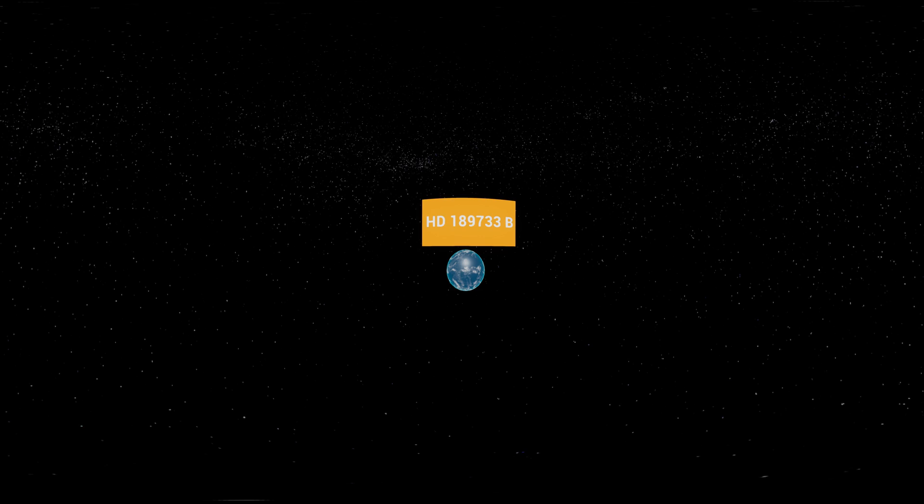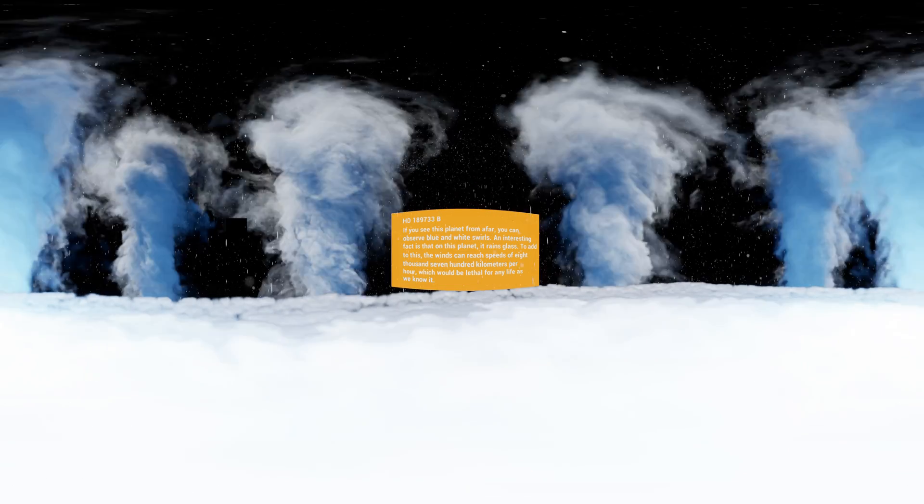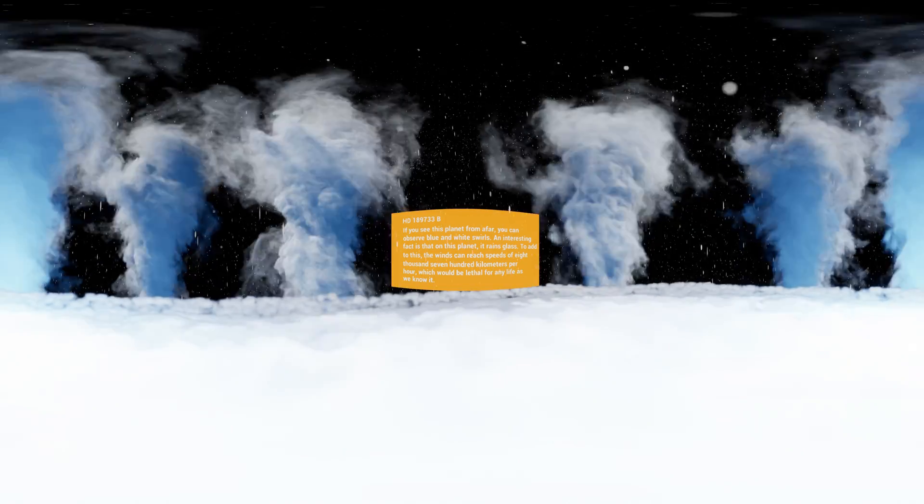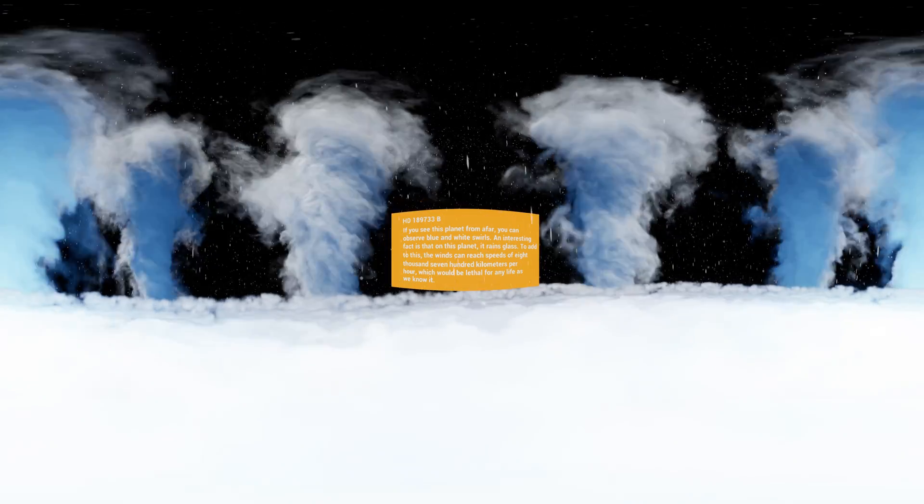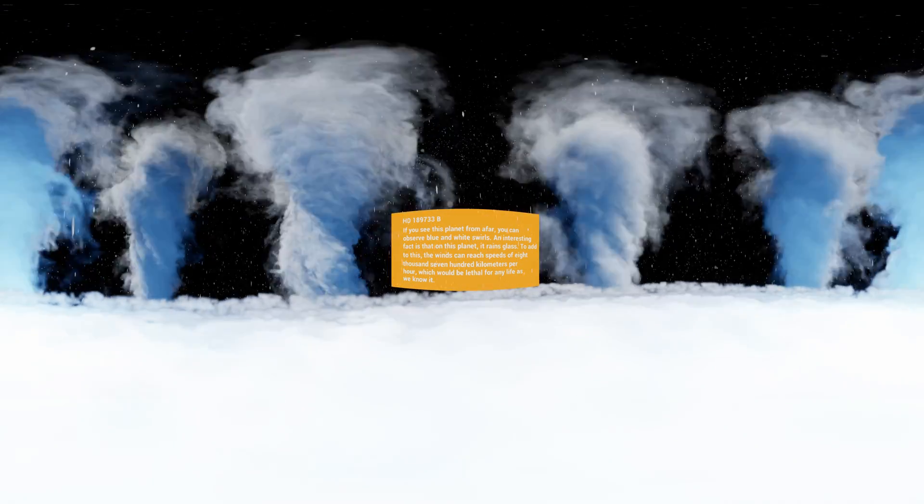HD-189733b. If you see this planet from afar, you can see blue and white swirls. An interesting fact is that on this planet, it rains glass. To add to this, the winds can reach a speed of 8,700 kilometers per hour.